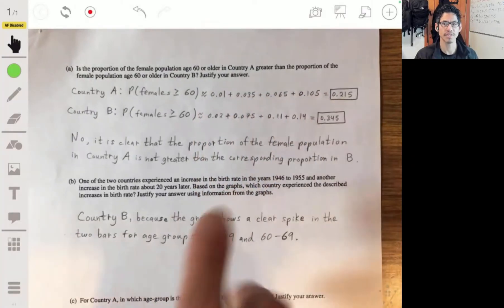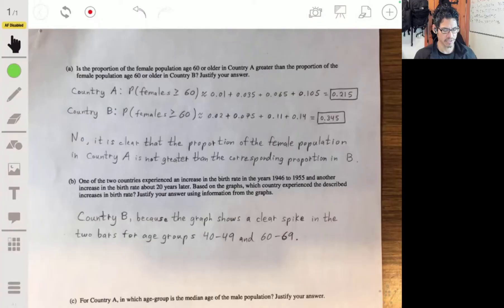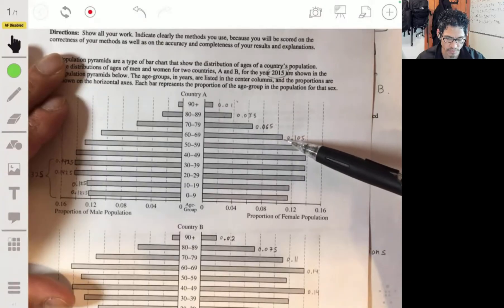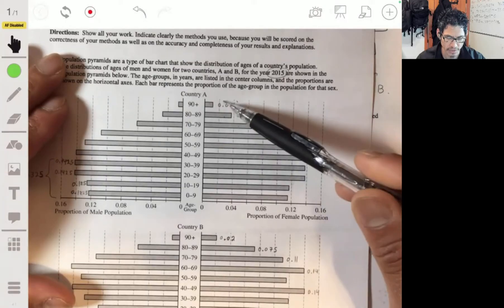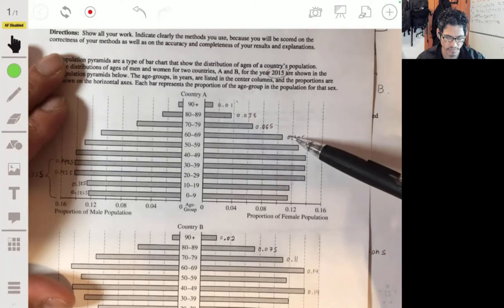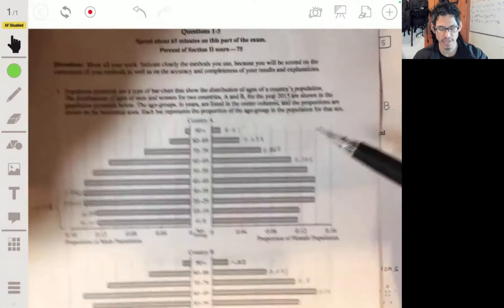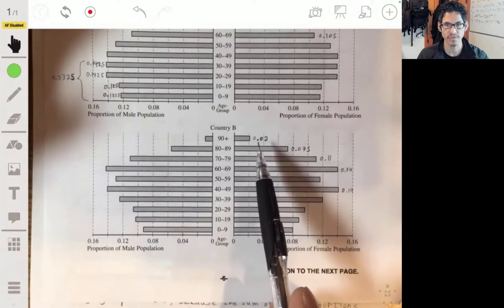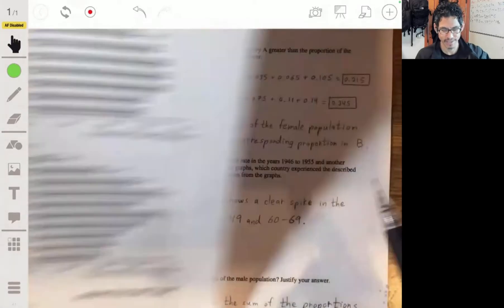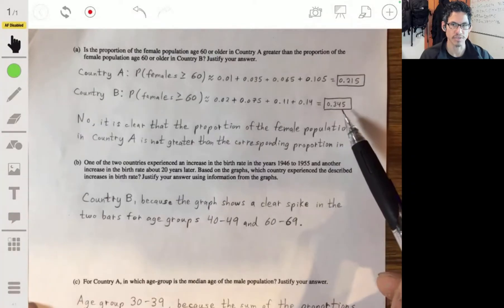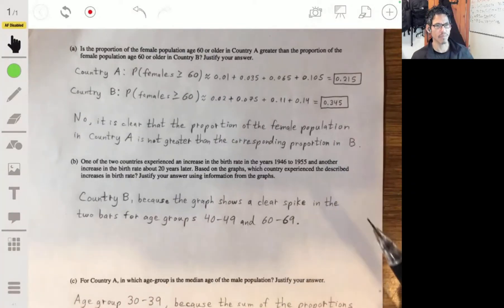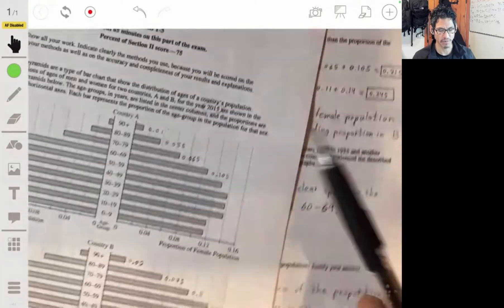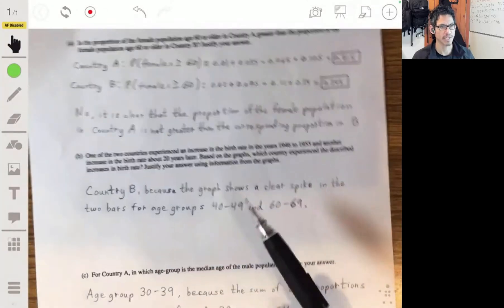So I did a numerical approximation based on what I can tell these bars probably go up to. You really just need to look at the first four. Country A added these four, and I got about 0.215. And country B, I added the first four as well. And it's very clear and obvious that country B is larger. So you want to justify it in some way? I justified it with the work, and I showed exactly where those numbers are coming from. And I answered it.